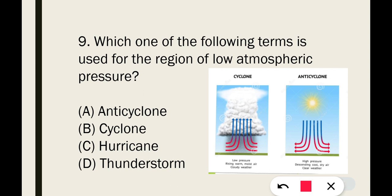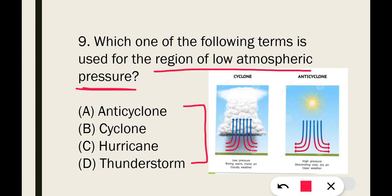Question number 9: Which term is used for the region of low atmospheric pressure? The correct answer is anti-cyclone. Option A, anti-cyclone, is the correct answer for the region of low atmospheric pressure.